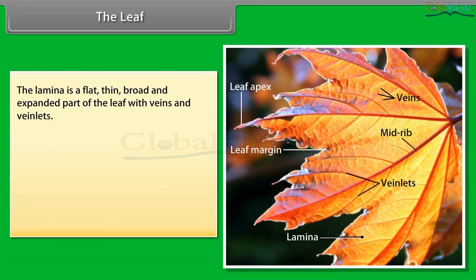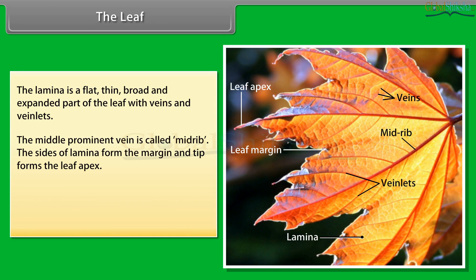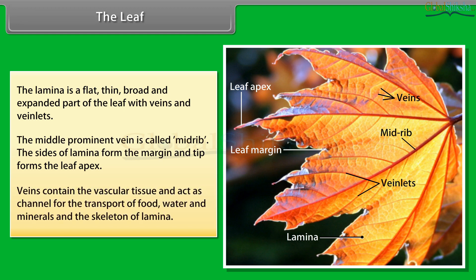The lamina is a flat, thin, broad and expanded part of the leaf with veins and veinlets. The middle prominent vein is called the midrib. The sides of the lamina form the margin and the tip forms the leaf apex. Veins contain the vascular tissue and act as channels for the transport of food, water and minerals, and provide the skeleton of the lamina.